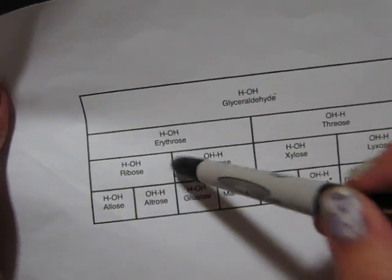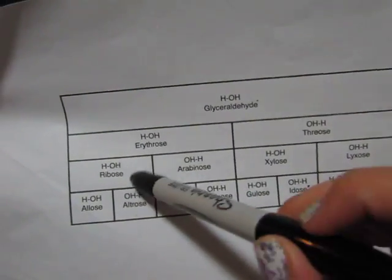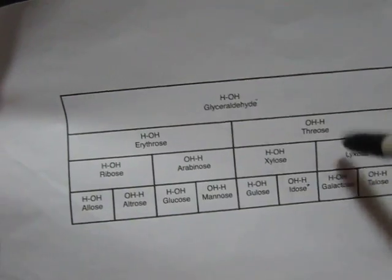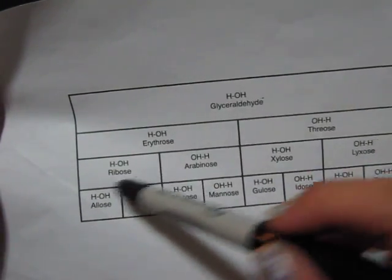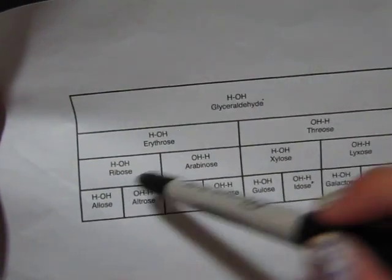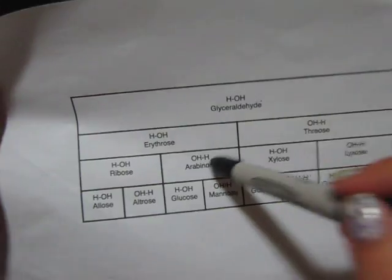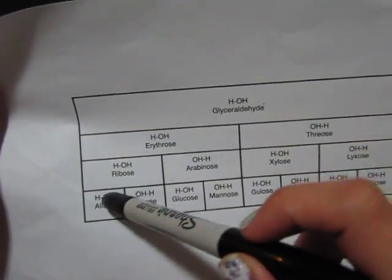Then erythrose splits into two again, so it's powers of two — there are four columns on the third row. That's ribose, arabinose, xylose, and lyxose. And then on the end you get eight, so each one of these splits into two.